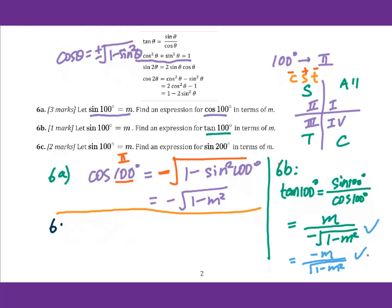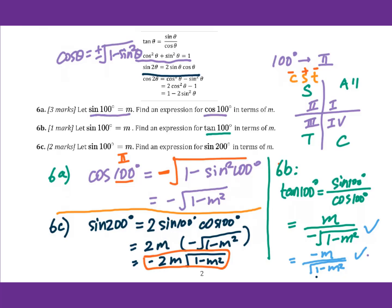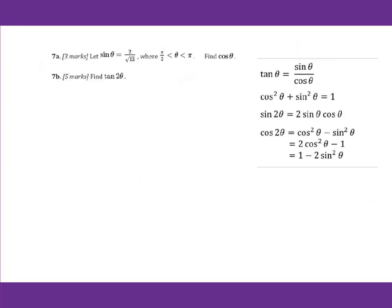Let's go to 6c. We want to find sine 200°. Using the double angle formula, sine 200° equals 2 sine 100° cosine 100°. That gives 2 times m times negative square root of 1 minus m squared, so the answer is negative 2m times square root of 1 minus m squared.